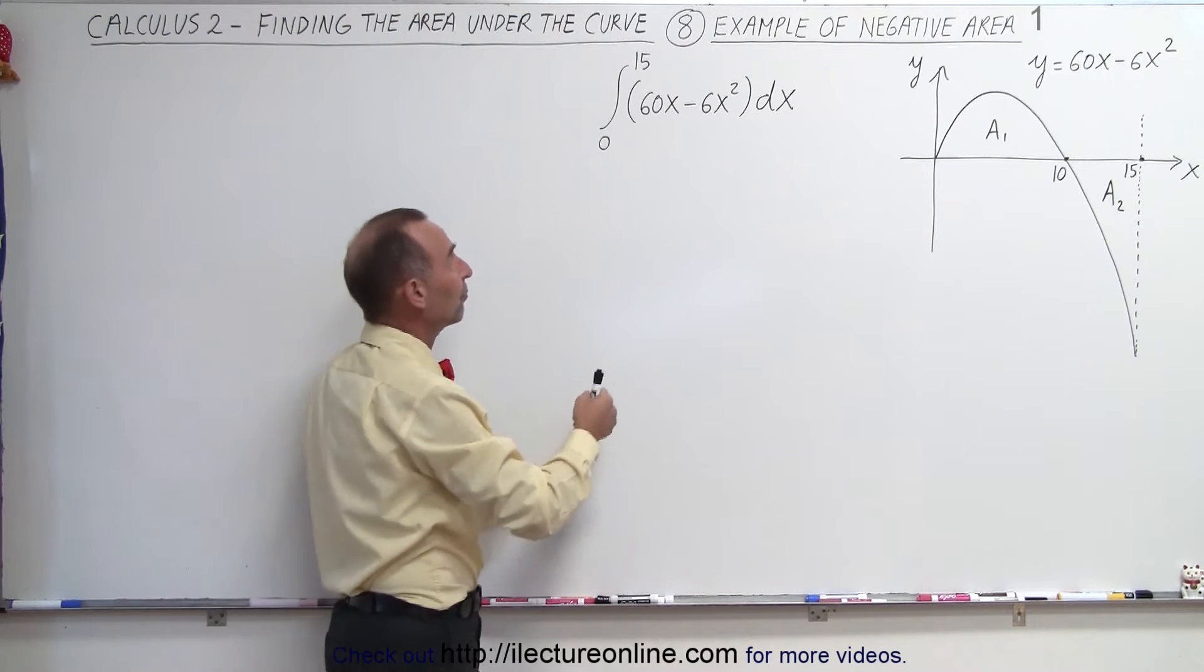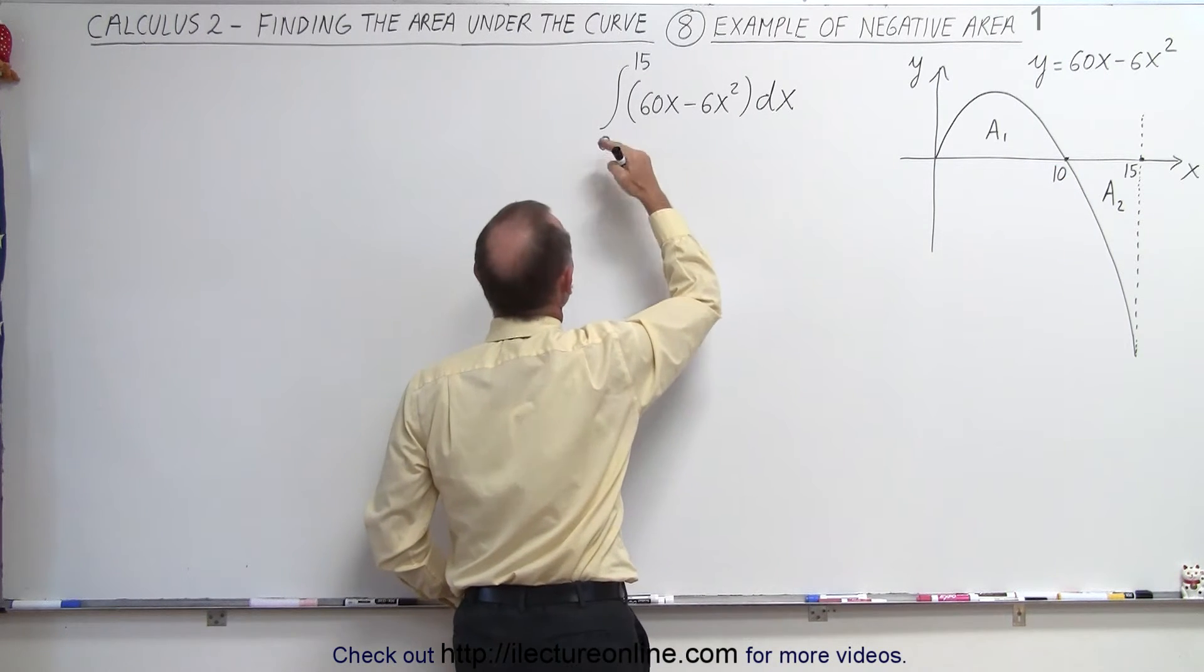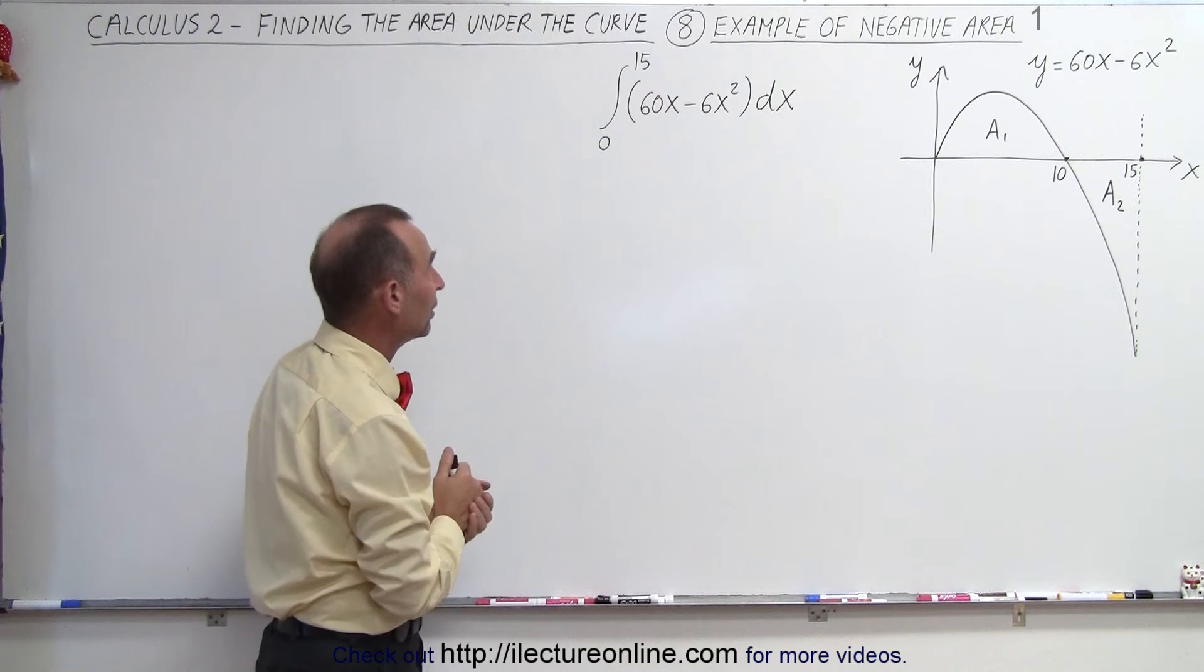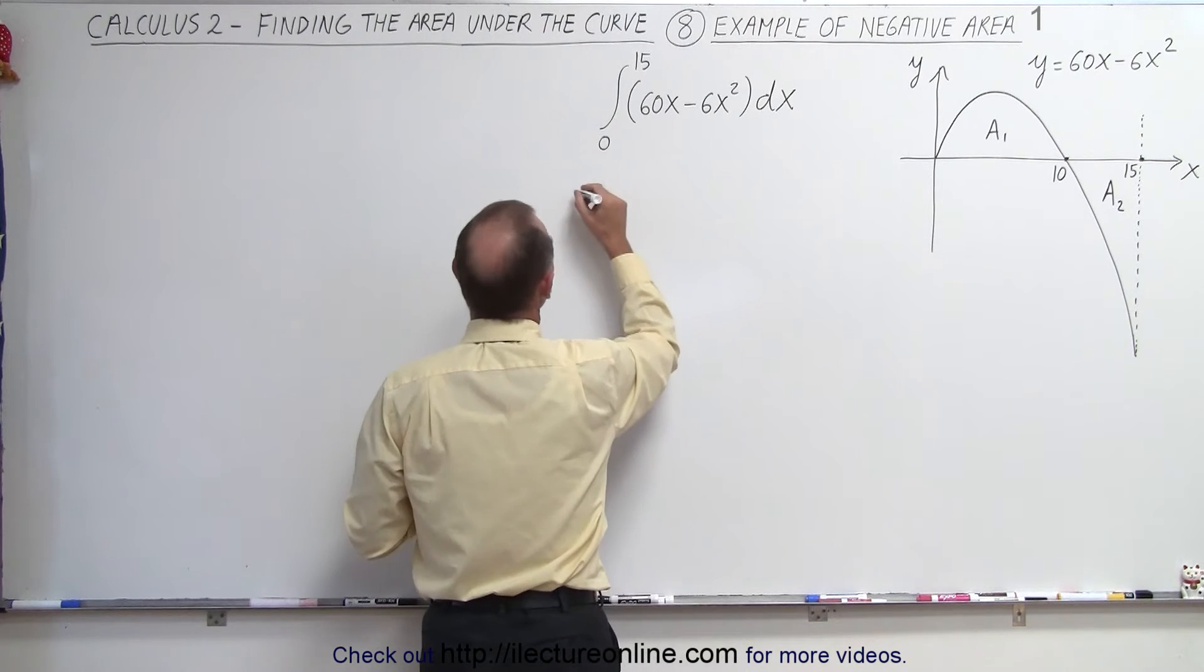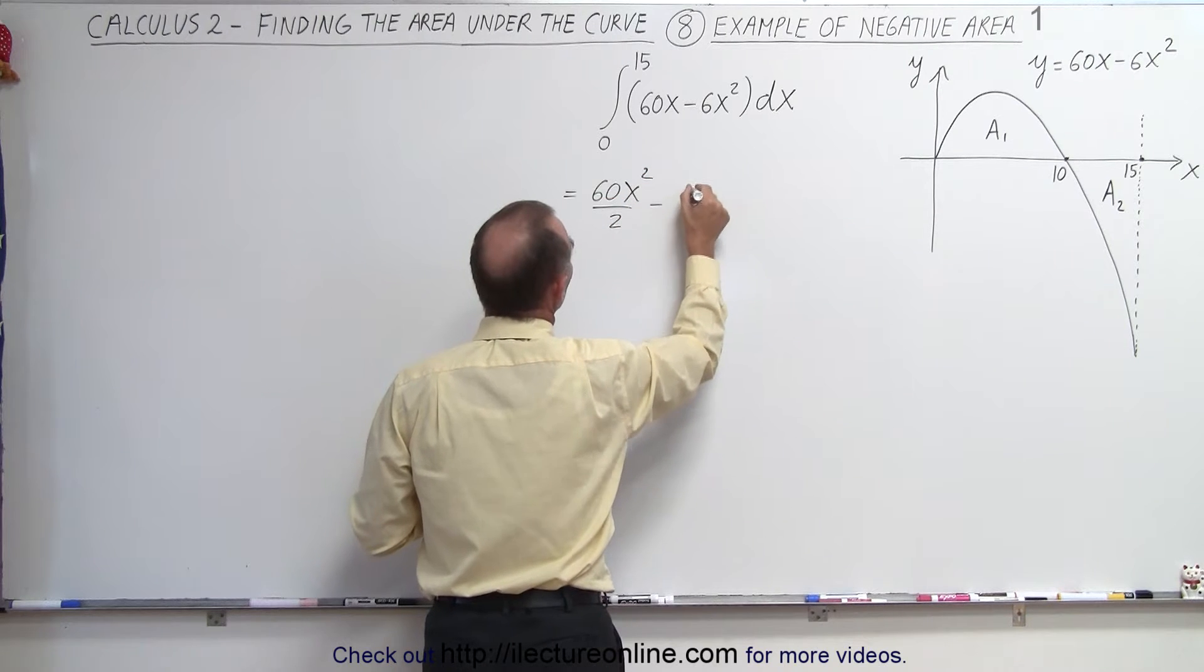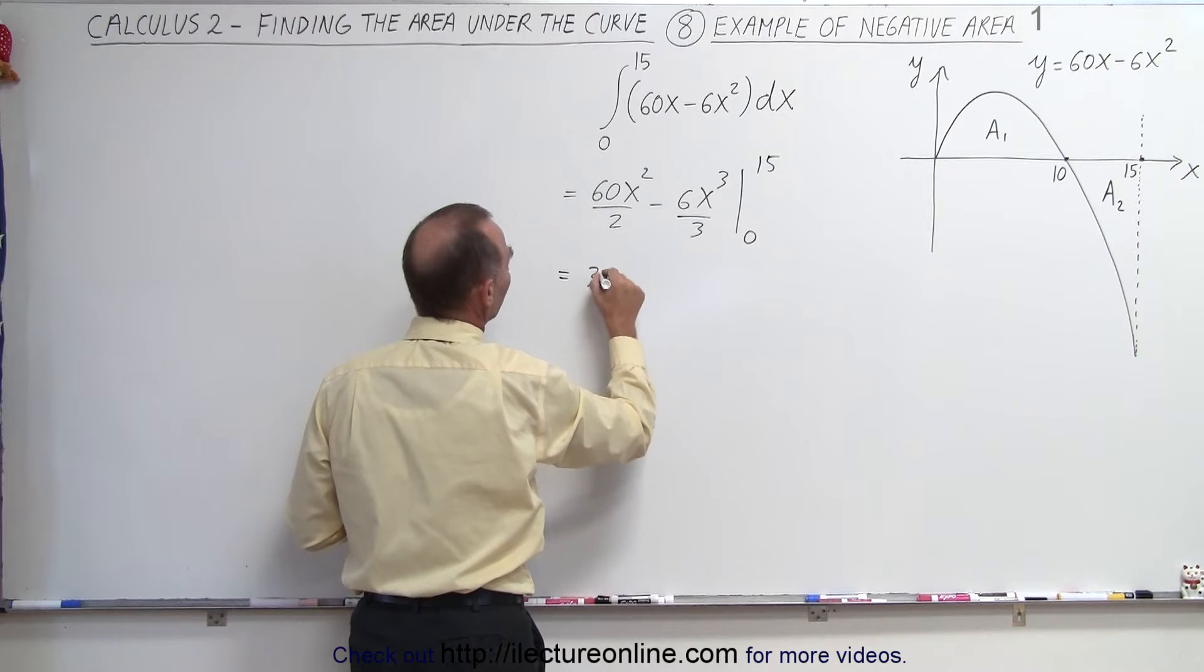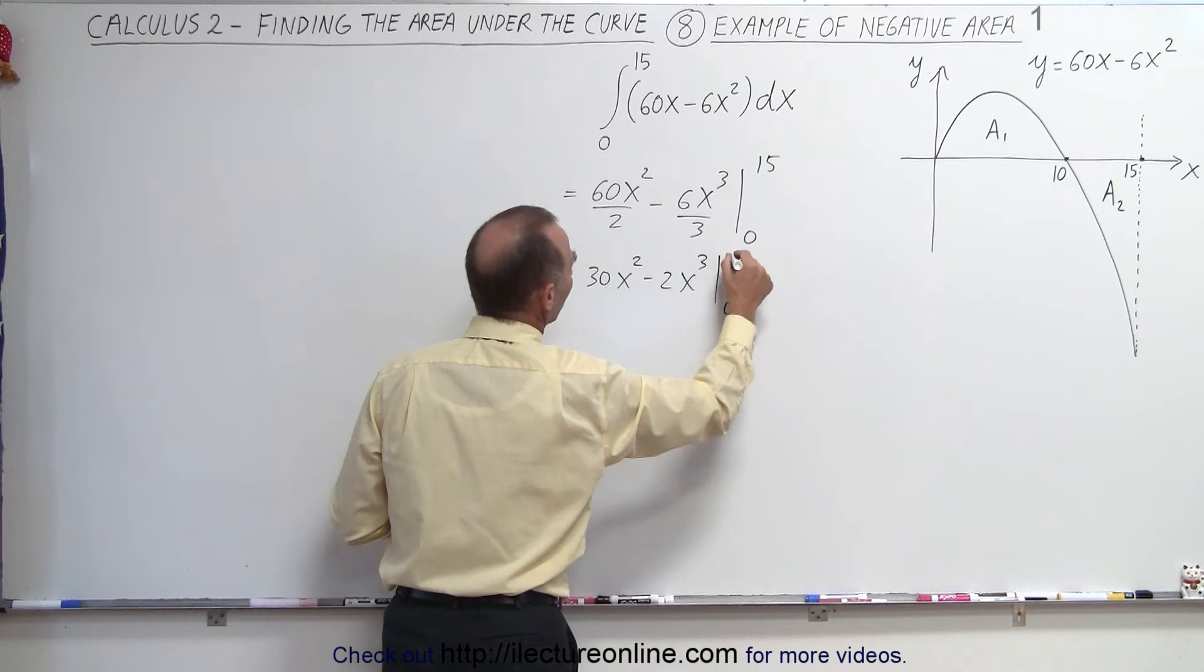Let's say that someone asks you to find the area underneath the curve defined by this equation and the limits of integration are from 0 to 15. And if you did not draw out the curve, if you did not know what that looked like and you went ahead and tried to find the area underneath the curve, let's see what would happen if we did just that. So first we're going to integrate this. So this becomes equal to 60x² divided by 2 minus 6x³ divided by 3 evaluated from 0 to 15.